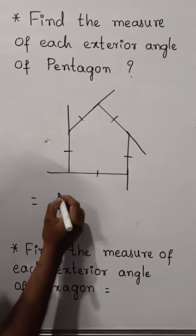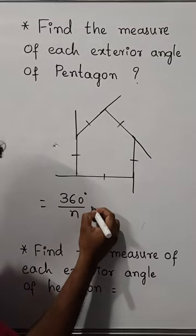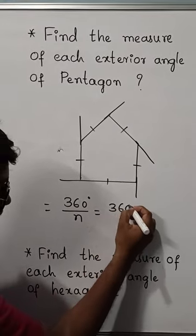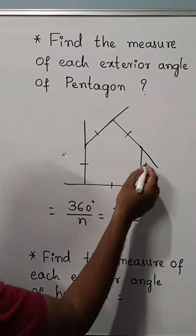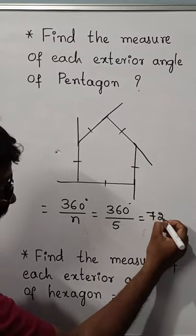This is equals to, we know the formula which is equal to 360 degree divided by n. Here n means number of sides, which is equal to 360 degree divided by the number of sides is equal to 5, that is equals to 72 degree.